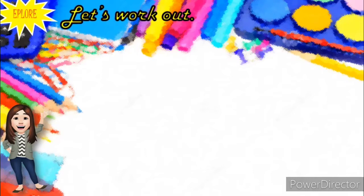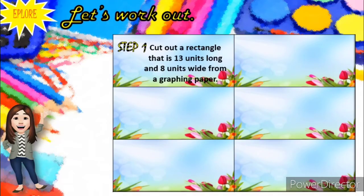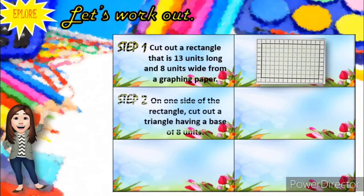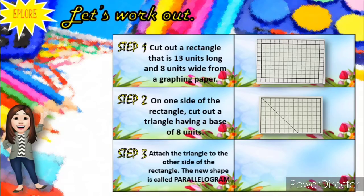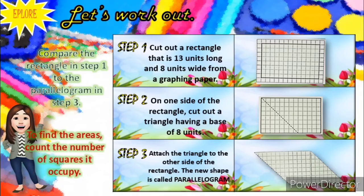To make things clear, let's work out. This activity will show us that a parallelogram is part of a rectangle. If you have graphing paper, you can try this. If not, just observe and watch the video carefully. Step 1: cut out a rectangle that is 13 units long and 8 units wide from a graphing paper. Step 2: on one side of the rectangle, cut out a triangle having a base of 8 units. Step 3: attach the triangle to the other side of the rectangle. This new shape is called a parallelogram.